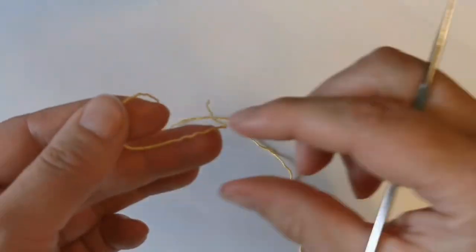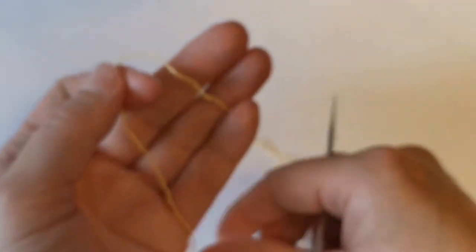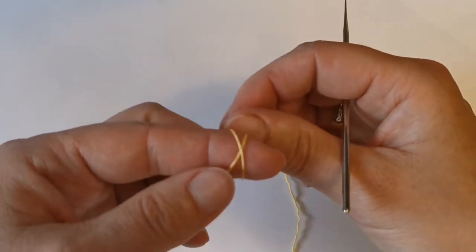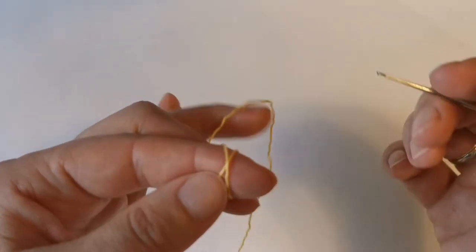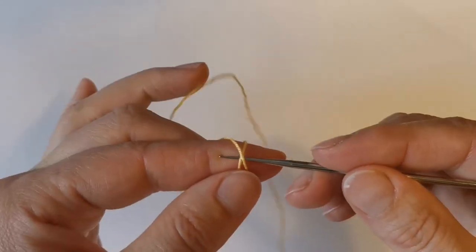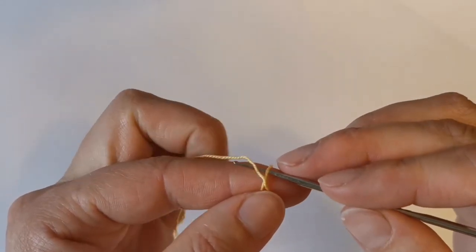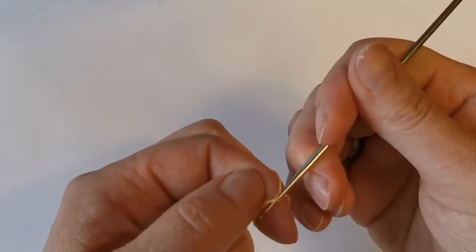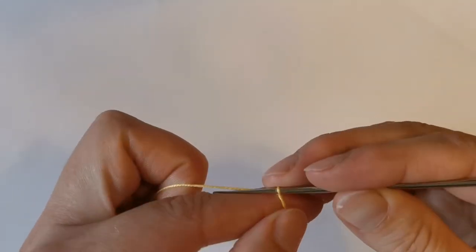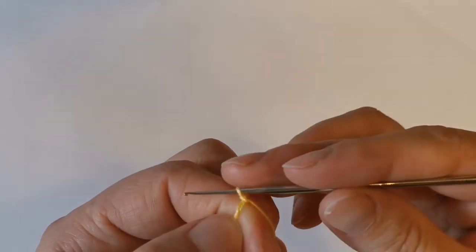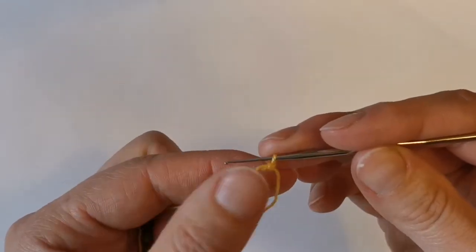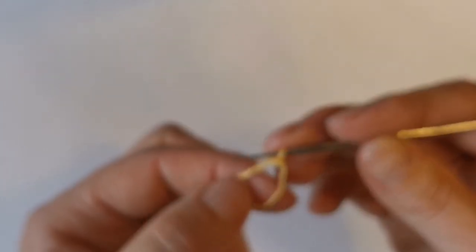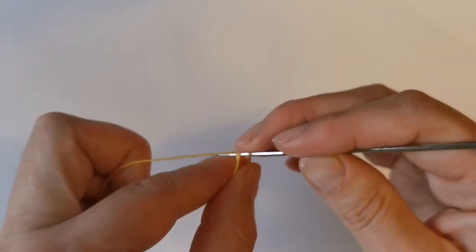We make an amigurumi loop. Place short tail in your palm, twist it over the finger, grab the hook, cross, put the hook under the cross, make a chain to secure, remove the ring. Now make nine single crochet into the ring. Insert the hook, yarn over, pull it up, yarn over, pull through two loops.